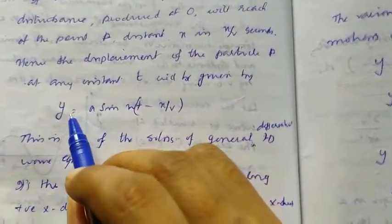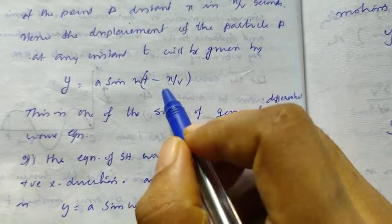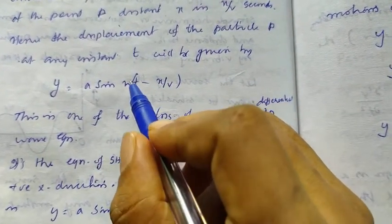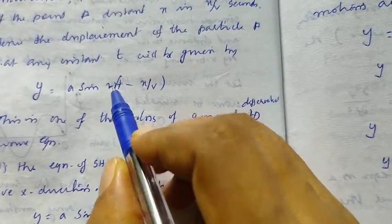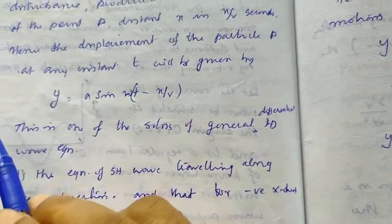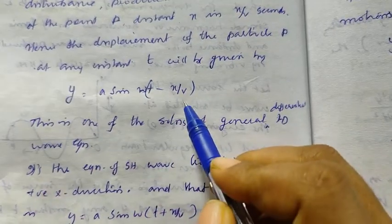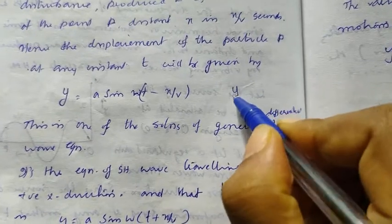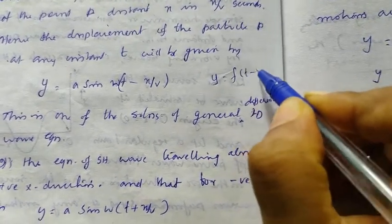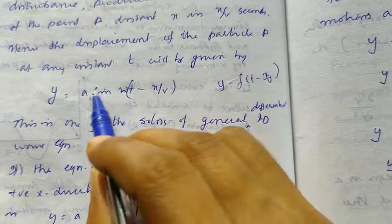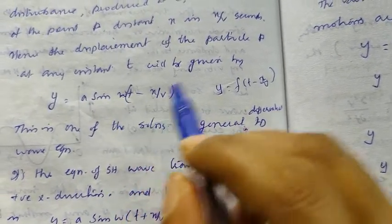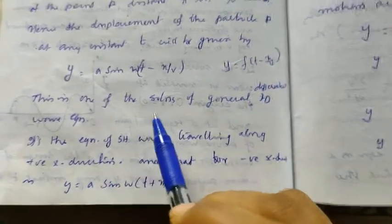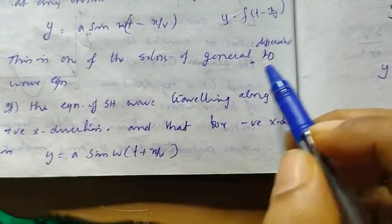We can represent the displacement at point P as y = a sin ω(t − x/v). This is one of the solutions of the general differential equation of wave motion.